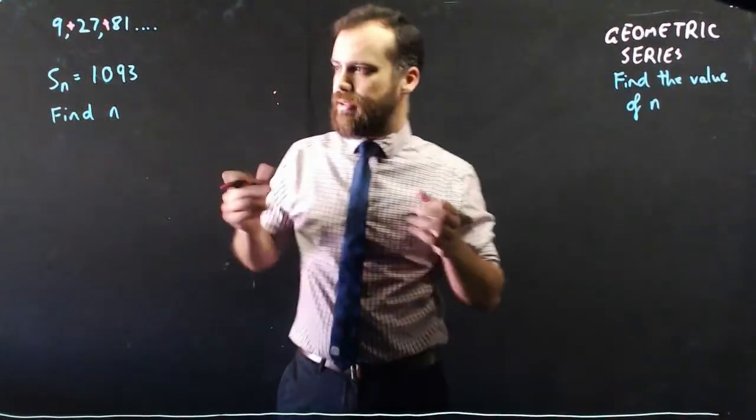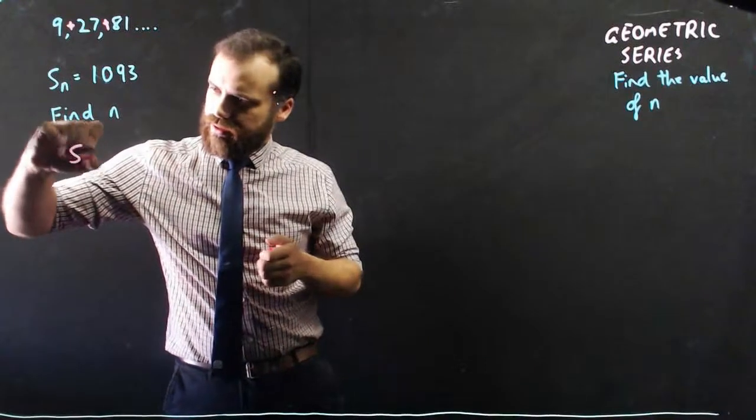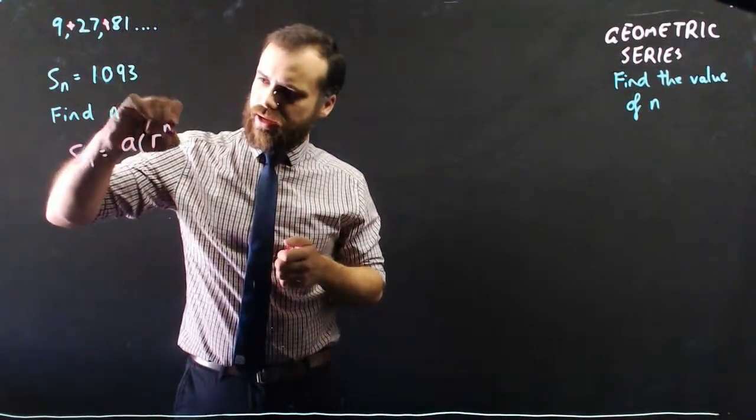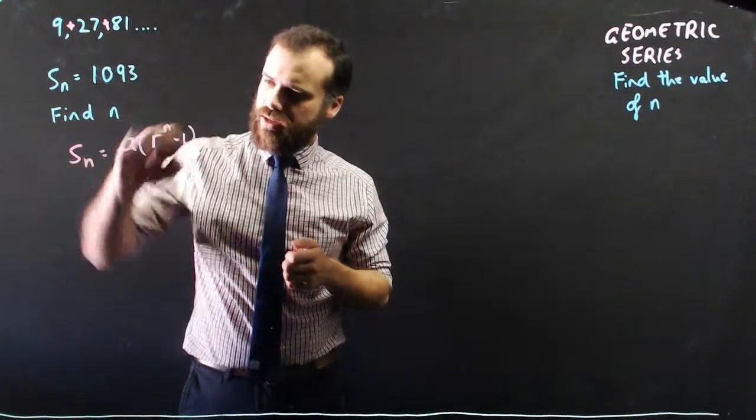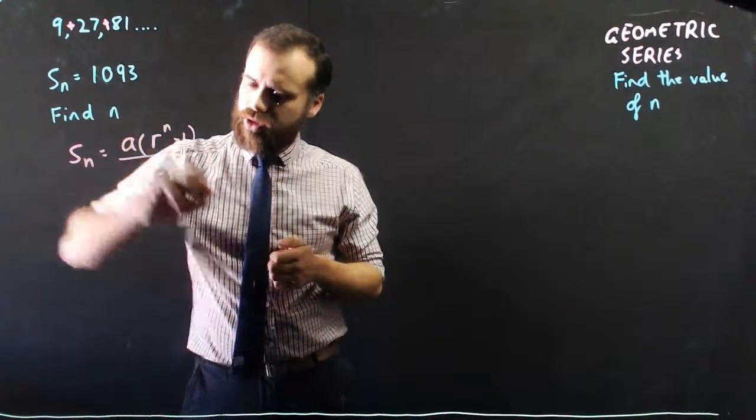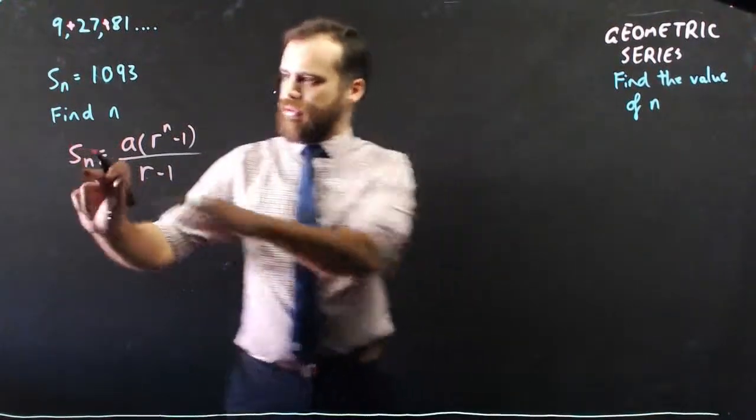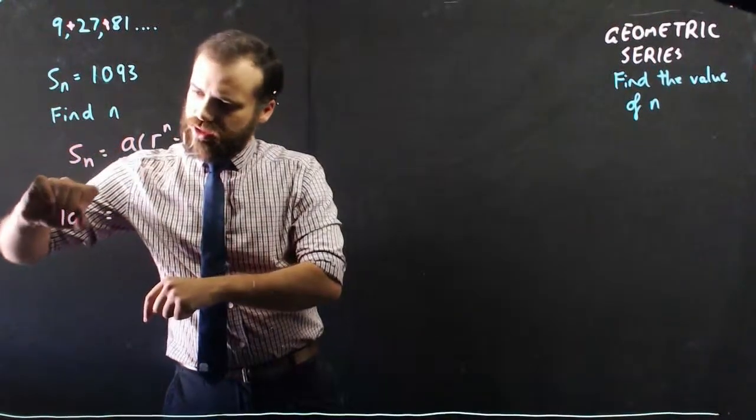So how many? We've got our formula here, a times r to the n minus 1 over r minus 1. Now in this question, this one's going to be 1,093.